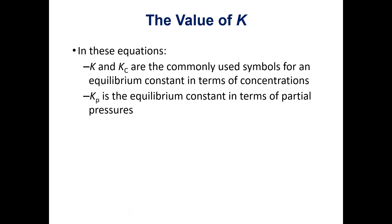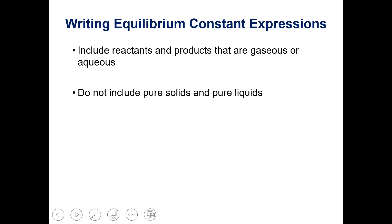K and Kc are both used for the equilibrium constant when talking about concentrations. Kp is only used when talking about the equilibrium constant using the partial pressures of gases. When writing an equilibrium constant expression, we include reactants and products that are in the gaseous state or aqueous, but we leave out pure solids and pure liquids. For a solid, only surface area matters, so we only include gaseous or aqueous species.